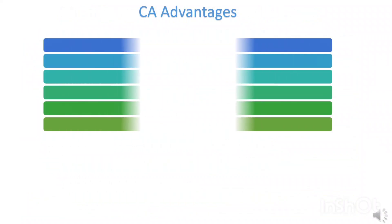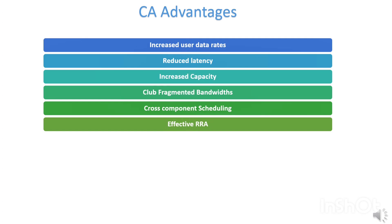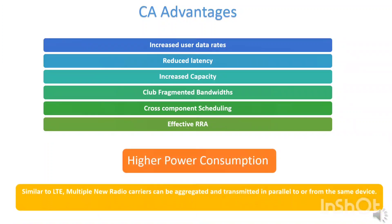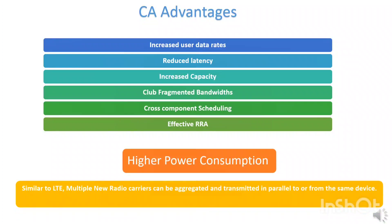Summarizing the advantages of carrier aggregation, the main advantages are: increased user data rates, reduced latency, increased capacity, clubbing fragmented bandwidths resulting in greater bandwidth utilization, cross-component carrier scheduling, and effective utilization of radio resources as the control channel on one component carrier can be used to allocate resources at another carrier. The real benefit of combining is to provide an efficient way to utilize the available capacity, and aggregating multiple carriers enables improved efficiency so that more people can be served. However, carrier aggregation operation requires more receiver activity and processing, and therefore power consumption is higher. Similar to LTE, multiple new radio carriers can be aggregated and transmitted in parallel to or from the same device, resulting in efficient radio resource allocation and management.